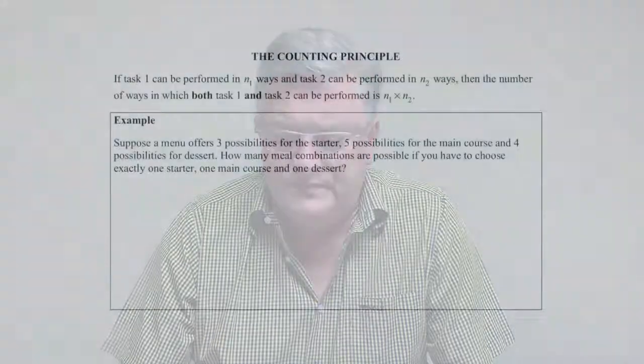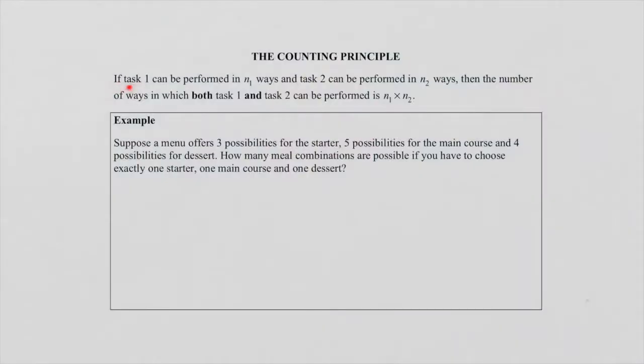What is the counting principle? So let's go to the screen and read the following paragraph. If task 1 can be performed in N1 ways and task 2 can be performed in N2 ways, then the number of ways in which both task 1 and 2 can be performed is N1 times N2.